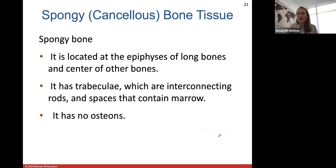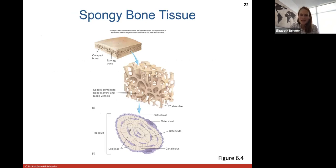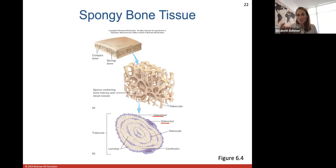Spongy or cancellous bone tissue is located at the epiphysis — the ends of your long bones — and at the center of other bones. It has trabeculae, which are interconnecting rods of bone matrix that make it look like a sponge, with spaces that contain marrow. It does not have osteons, so its bone tissue is arranged differently from compact bone, which lines the edges and periphery.